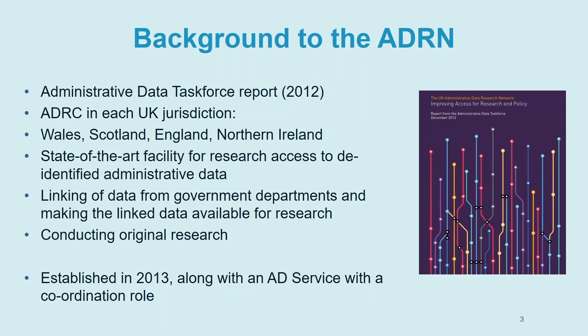The report recommended that there should be an administrative data research network with one ADRC — Centre — in each of the UK jurisdictions: Wales, Scotland, England, and Northern Ireland. These should be state-of-the-art facilities for research using de-identified data, able to link data from government departments, make that available for research in safe environments, and have a programme of original research. The ADRN was established in 2013, and alongside the centres there was also an administrative data service with a coordinating role, handling communications, branding, websites, and central training.